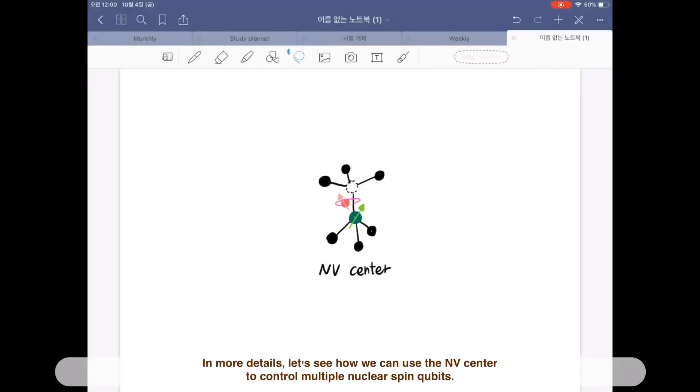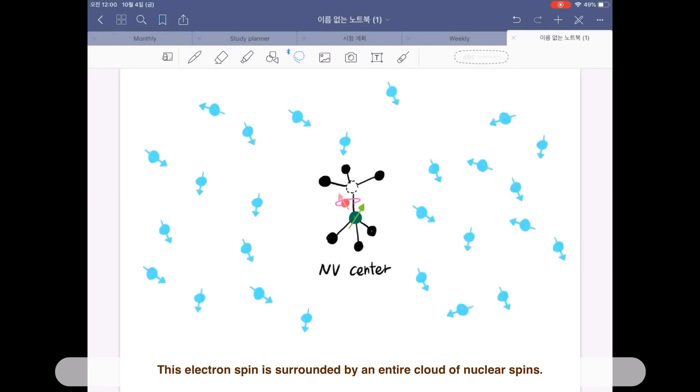In more details, let's see how we can use the NV center to control multiple nuclear spin qubits. This electron spin is surrounded by an entire cloud of nuclear spins. About 1% of diamond consists of carbon-13,